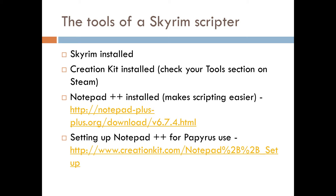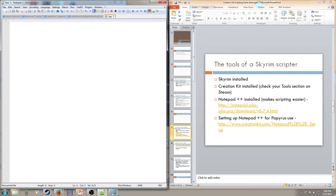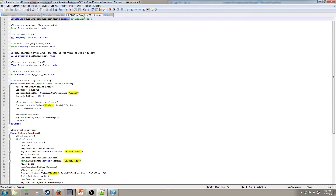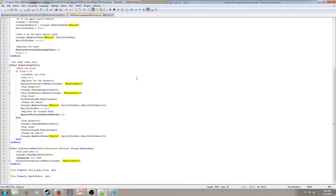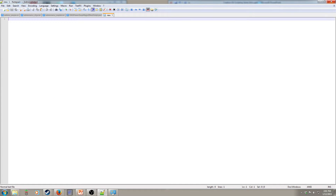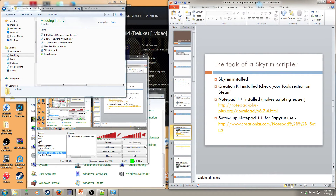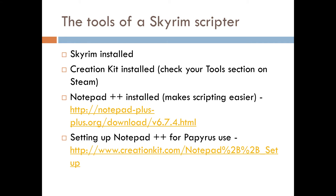Let me show you what Notepad++ looks like. Here we have this program — notice how it does syntax highlighting of all the events, variables, and objects. It's really, really useful. There's the download link so you can download Notepad++, and the Creation Kit wiki actually has a good step-by-step tutorial on how to set up Notepad++ for your Papyrus scripting.